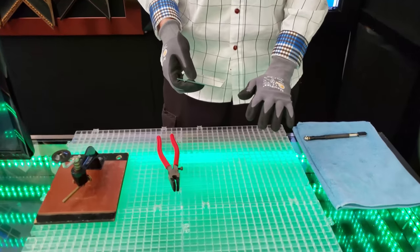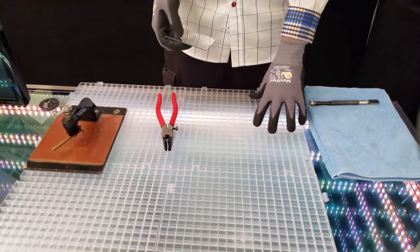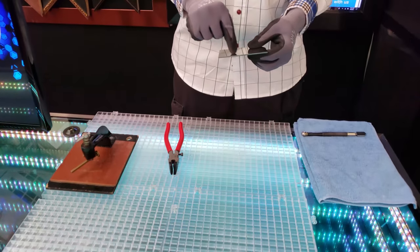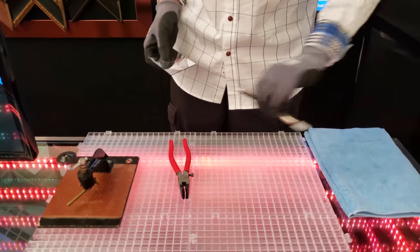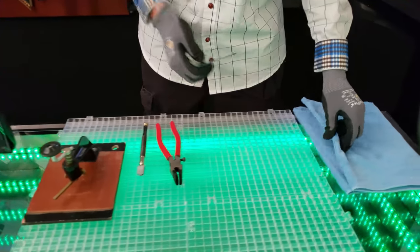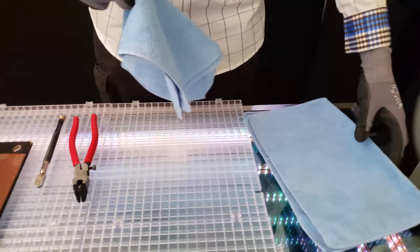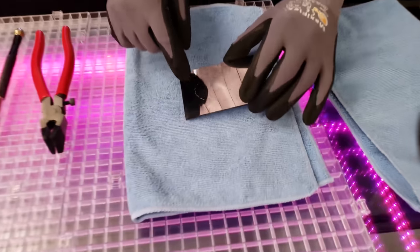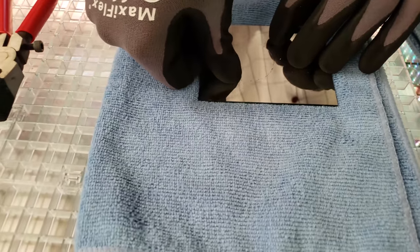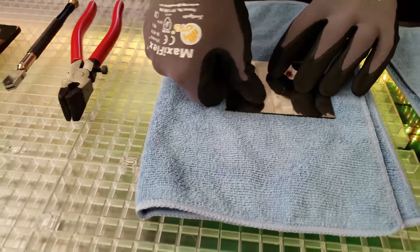Now what you'll need is a somewhat soft surface to help break the glass. A microfiber cloth is ideal for that. Lay it down on your surface and propagate the crack through the glass.